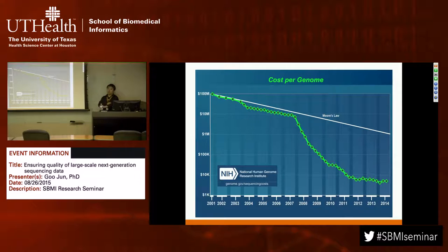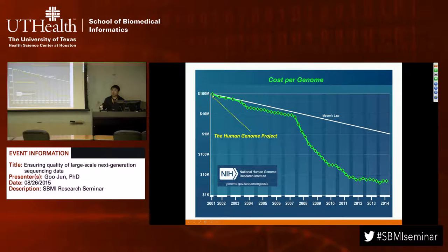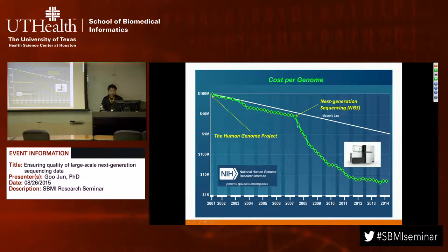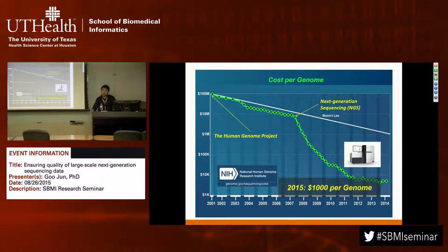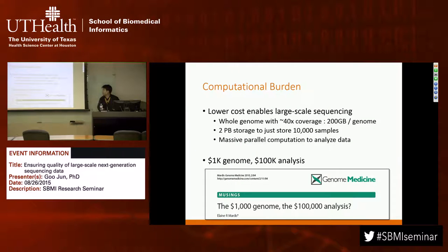This is an illustration of how fast the cost of sequencing is decreasing — it's decreasing faster than Moore's Law since the first human genome project. In 2001, Francis Collins and Craig Venter sequenced the entire human genome for about $100 million for just a single genome. Since the introduction of next-generation sequencing, it decreased much faster. Today, Illumina's HiSeq 10 machine can sequence a whole genome at 30X coverage for just slightly over $1,000. Lower cost means we can sequence more samples with the same amount of money.